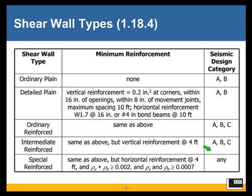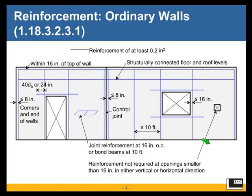In categories A, B, and C, we can use ordinary or intermediate reinforced shear walls. There is some prescriptive reinforcement required — it's perhaps easier to just show it with a diagram. For ordinary and intermediate shear walls, there's reinforcing at the top of the wall, at structurally connected floor and roof levels, and above and below openings. Then there's either joint reinforcement at 16 inches on center or bond beams at 10 feet.